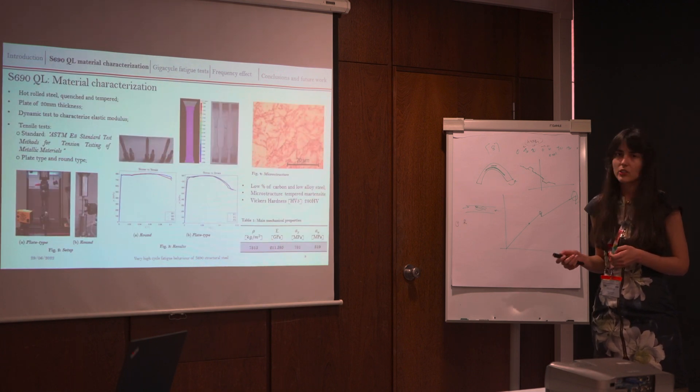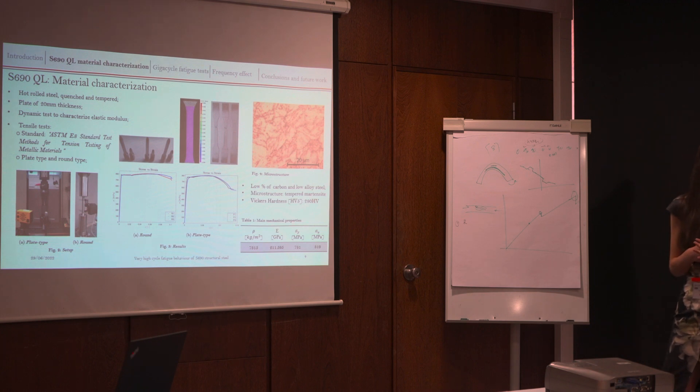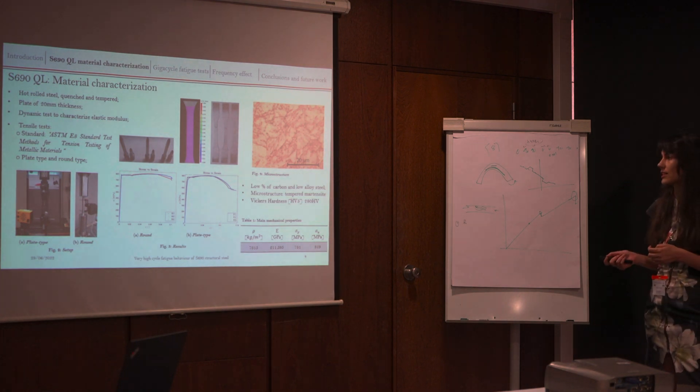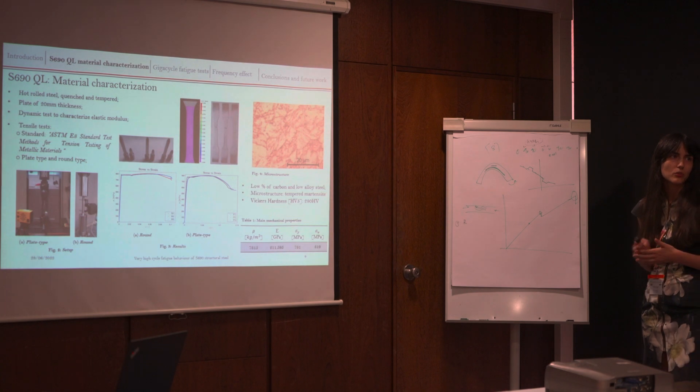About characterization, we started by characterizing this material because as you are going to see, it's important to design our specimens. We performed some samples analysis and you can see here the microstructure that is almost martensite. And we also measured Vickers hardness because it's also going to be important to estimate our stress range of evaluation.